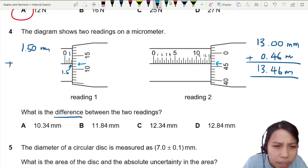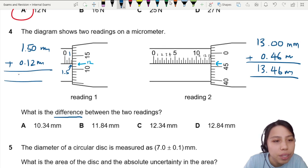This looks like a 12, 13, 14, 10, 11, 12, 12. So if that's a 12, I'm going to put 0.12 millimeters. This gives me 1.62 millimeters.